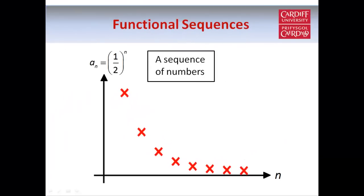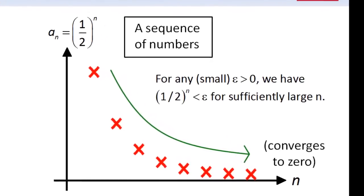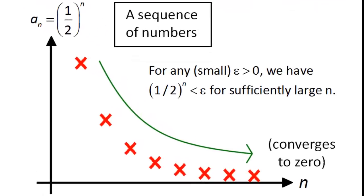Just to recap: suppose we have a sequence of numbers which is convergent. In this diagram, our sequence is defined by a_n equals one half to the power n, for all natural numbers n. So a_1 equals one half, a_2 equals one quarter, and so on, and the sequence converges to a limit of zero. Using formal language, for any positive number epsilon, no matter how small, you can find a point in the sequence where all of the terms following that point will be within a distance of epsilon from the limit, which in this case is zero.